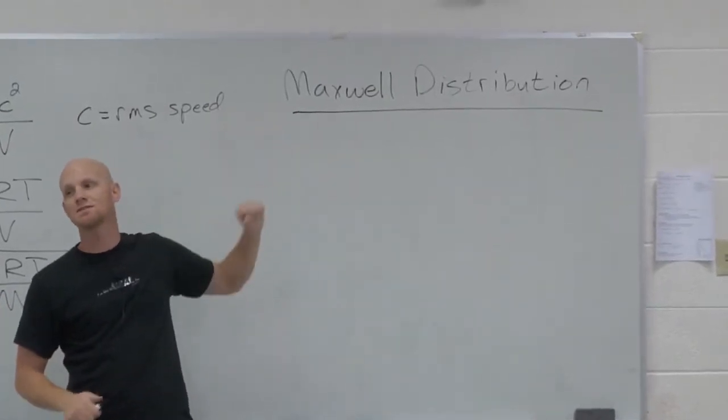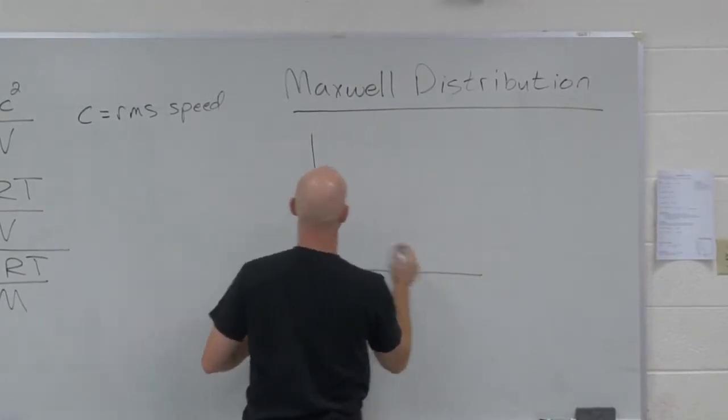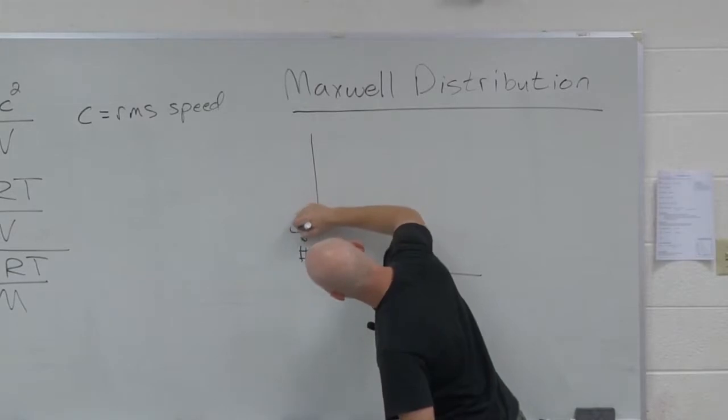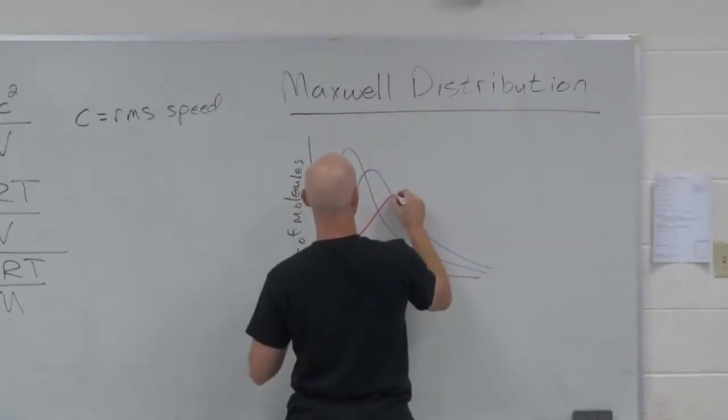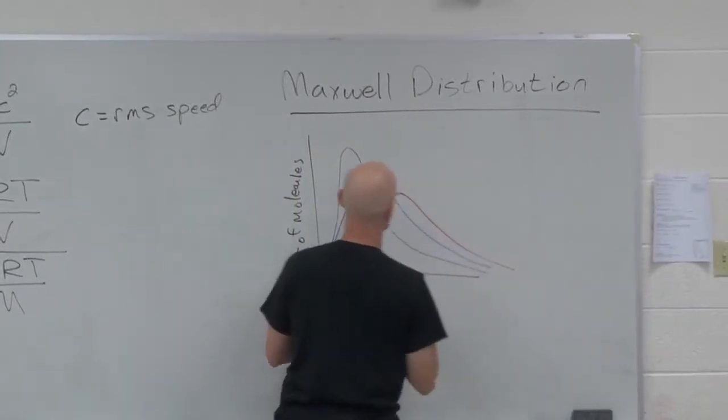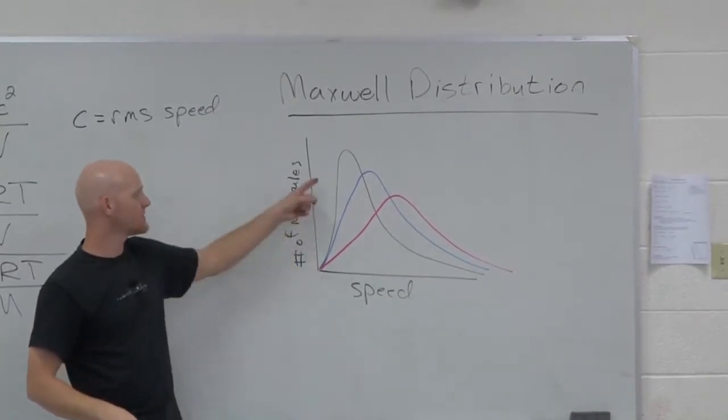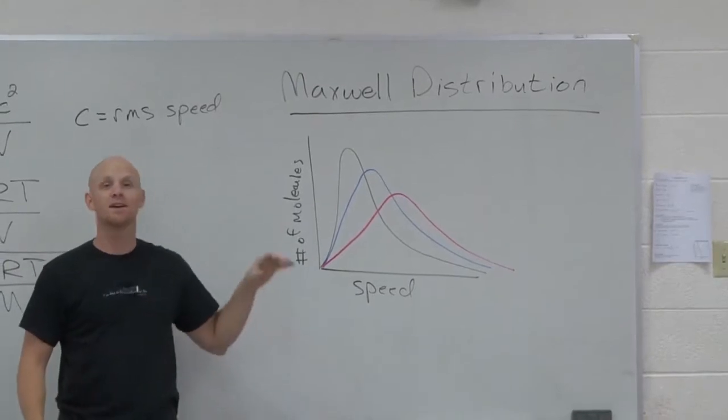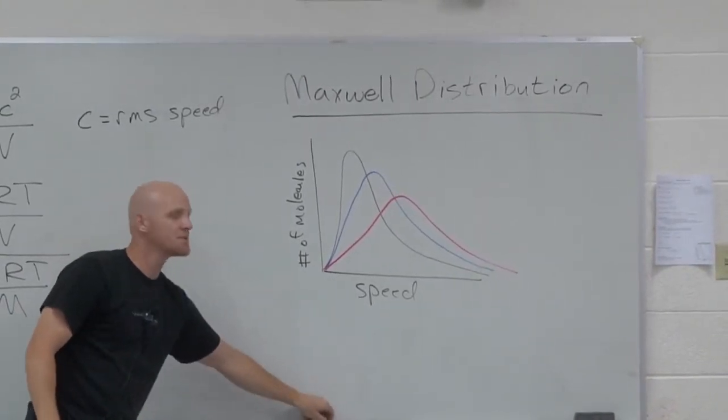And it's a distribution of speeds of molecules. If we kind of look at a graph here, and this graph is the one on your handout, and we kind of look at the number of molecules, or sometimes you'll see it labeled as probability. Now, these three different lines on your graph could mean one of two different things. They could be three different temperatures.